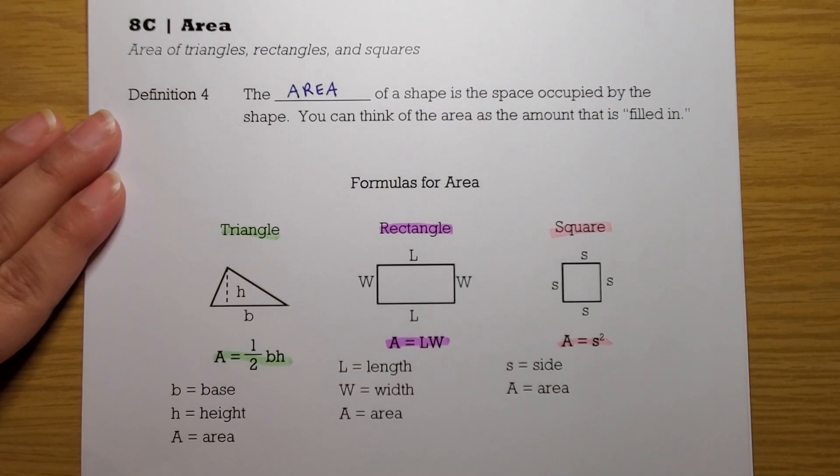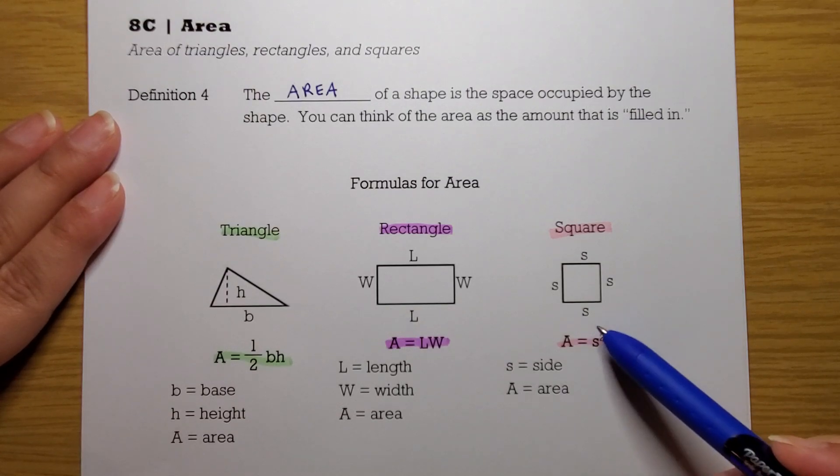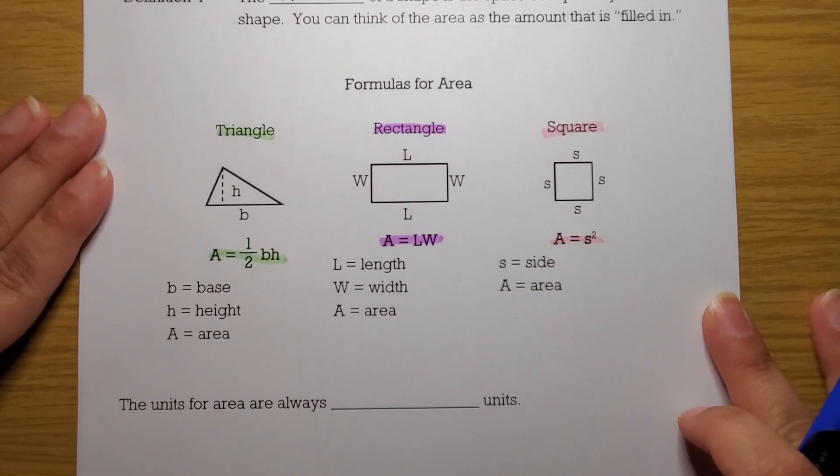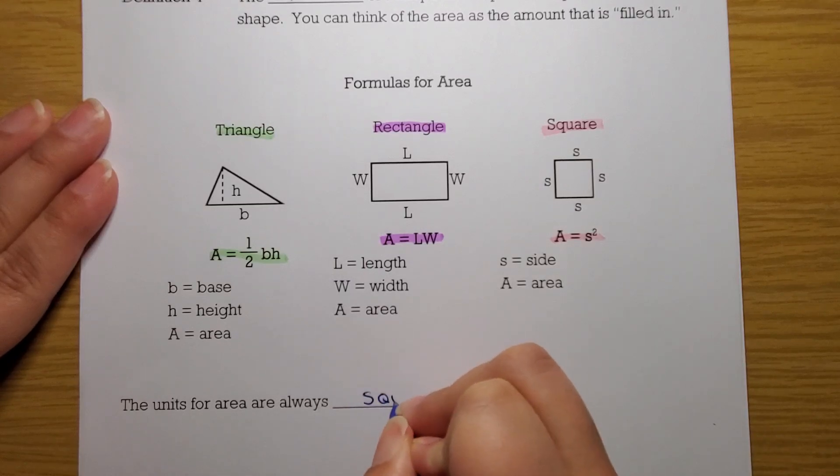Something else I want to point out about all three of these formulas is that you are multiplying dimensions as opposed to adding dimensions. If you have inches plus inches, you get inches. But if you have inches times inches, you're going to get inches times inches, which is inches squared. Just like side times side is side squared. Inches times inches is inches squared. Whenever you are finding area, the units are always squared units.